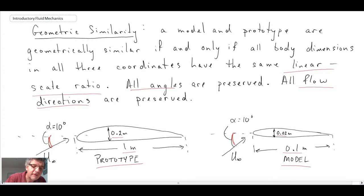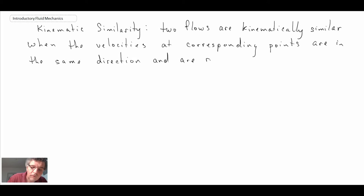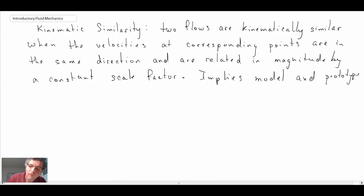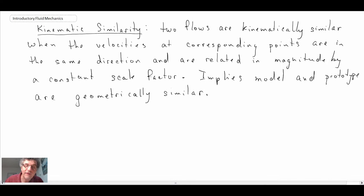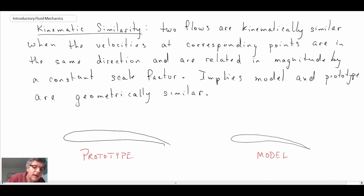The second condition of flow similarity is that of kinematic similarity. Kinematic similarity means that the velocities in the flow field at corresponding points need to scale. Again, we're going to use an example of an airfoil. We have on the left hand side our prototype and on the right hand side we have our model. If we were to look at a couple of different points within the flow field.